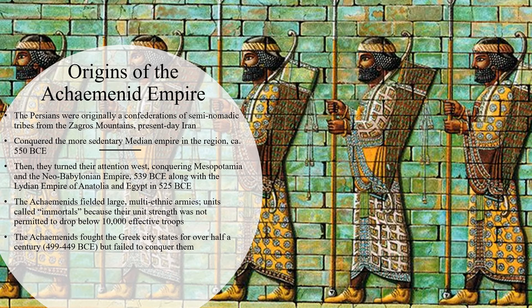They then conquered Egypt by 525 BCE. The Achaemenids fielded large, multi-ethnic armies. Units called Immortals were the dominant force in the Achaemenid army. They earned their name because they always kept at least 10,000 effective troops on the ground, leading their enemies to suggest that the Persian troops were immortal because they just never seemed to run out of soldiers.